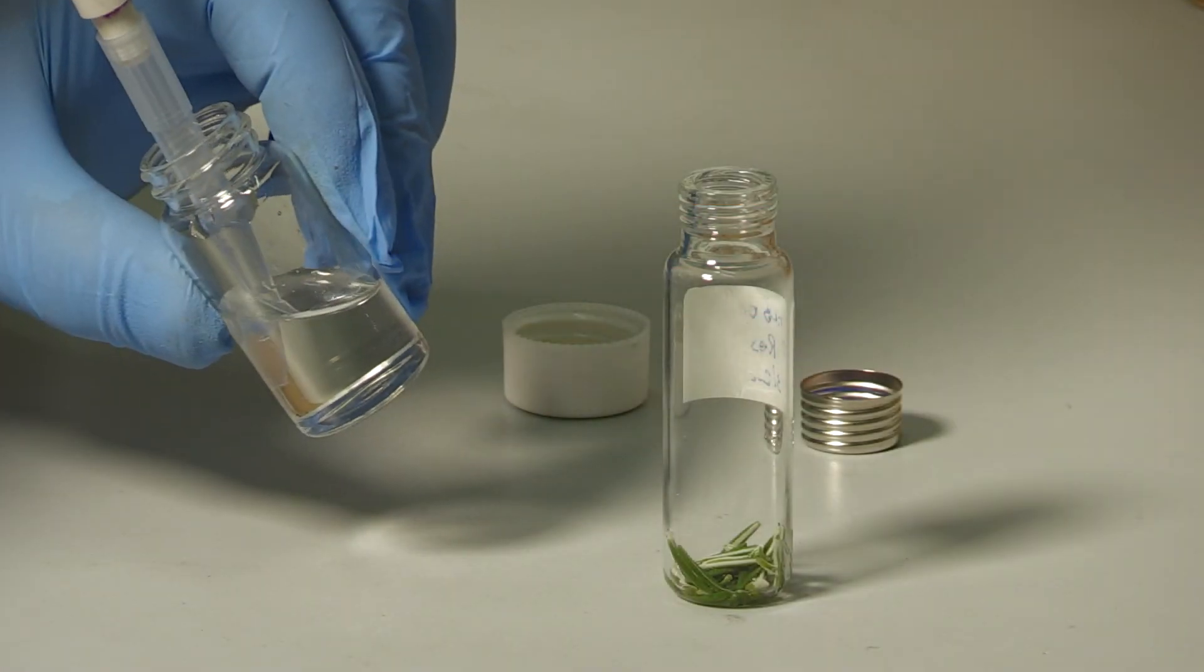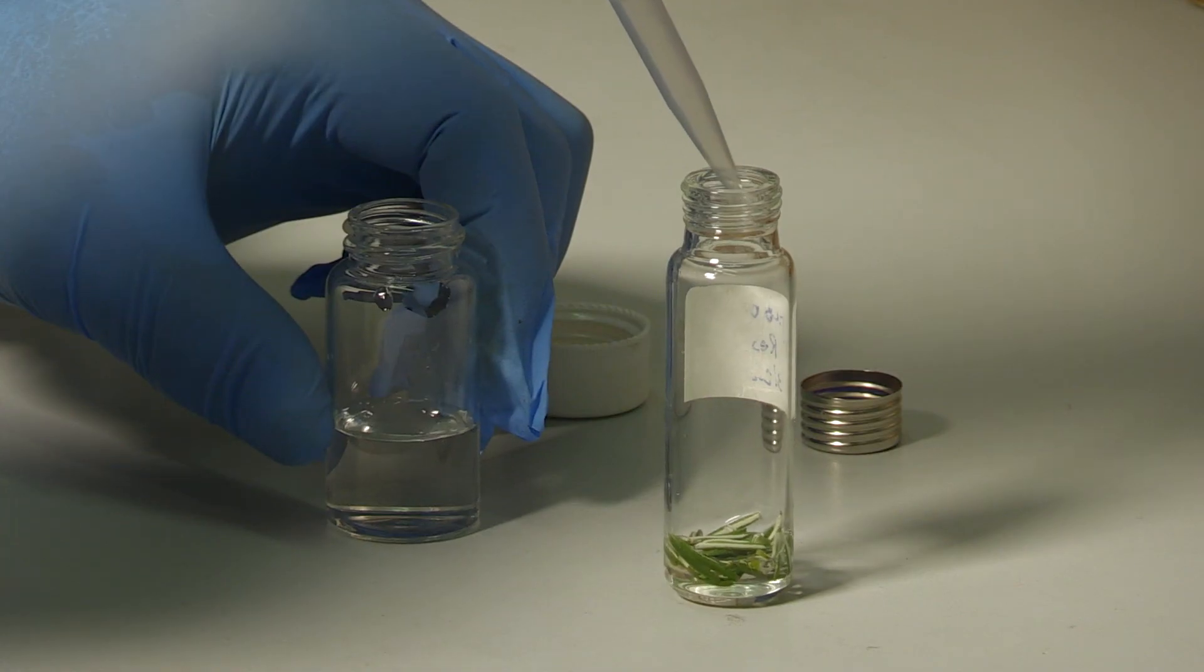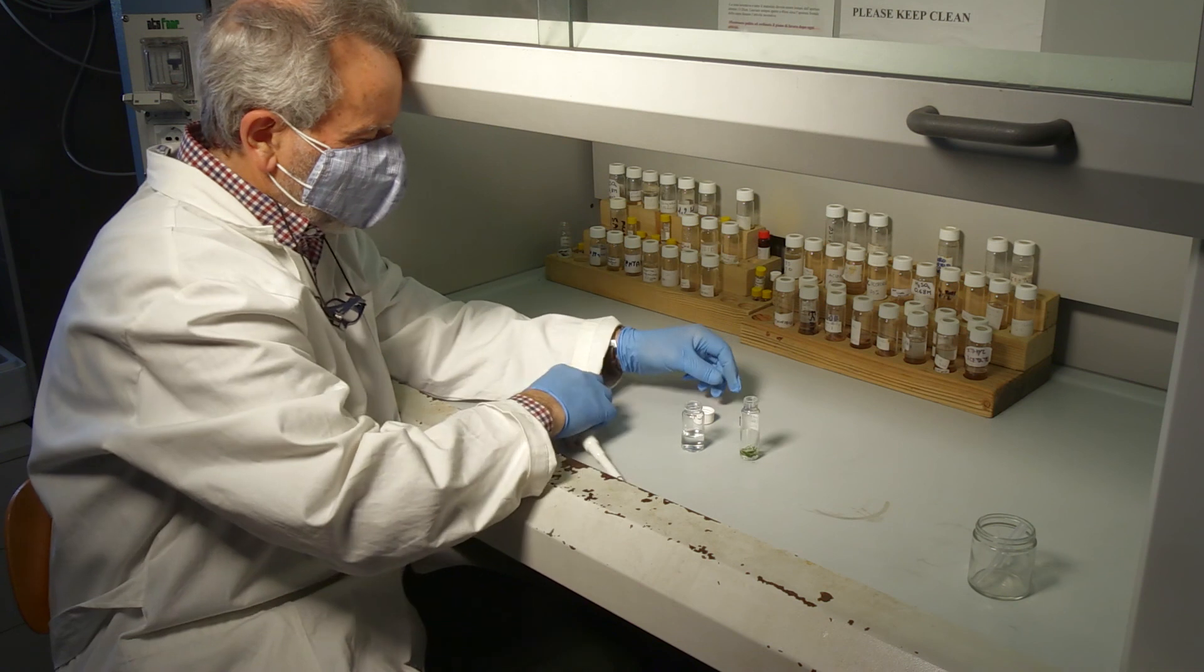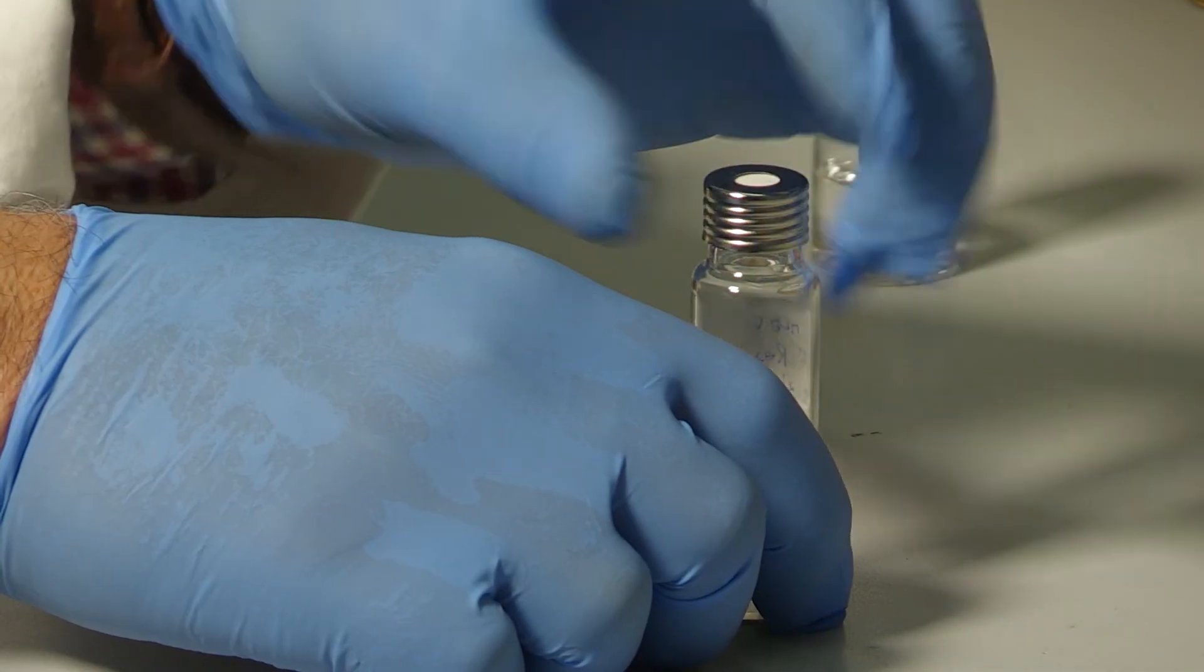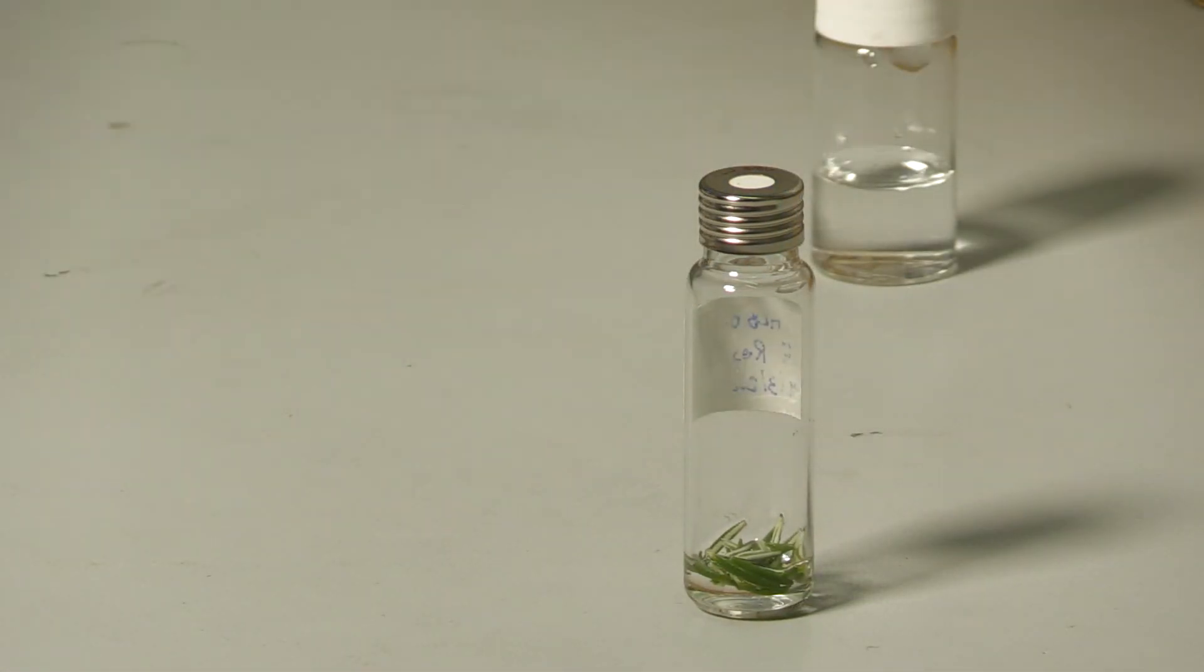To determine the chemical composition of each type of tissue, solvent extraction is performed. The material must be weighed and then an organic solvent is added to ensure the extraction of the volatile constituents from plant tissues.